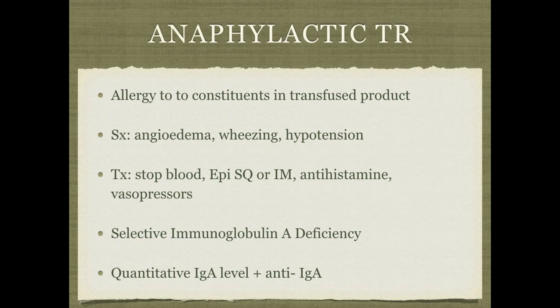Anaphylactic transfusion reaction occurs when there's an allergy to a product within the blood. You get angioedema, wheezing, hypotension — same symptoms as anaphylaxis. Stop the blood, give epi, give antihistamines. Patients who develop the most severe and fatal anaphylaxis are those with selective IgA deficiency — they don't make IgA, and when transfused blood containing IgA, they go into severe anaphylactic shock.